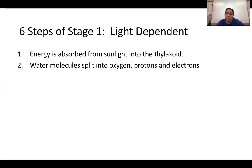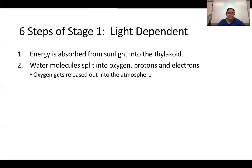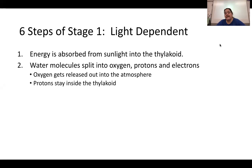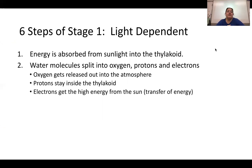When H2O is split, we get oxygen, protons, and electrons. The electrons become high-energy from the sun. Oxygen is released out of the leaf into the atmosphere — that's what we're breathing. The protons stay inside the thylakoid and will move through the electron transport chain and proton pump, just like in cellular respiration.